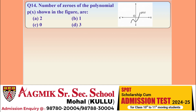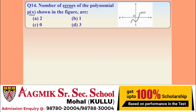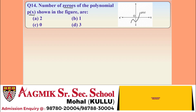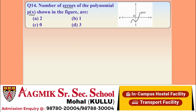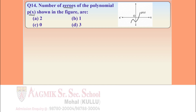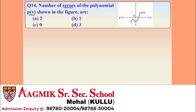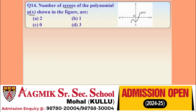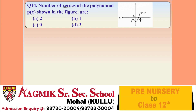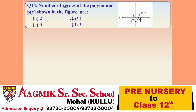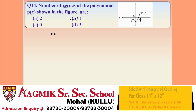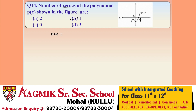Question 14: find the number of zeros of polynomial P(x) as shown in the figure. Zeros occur where the polynomial equals zero, i.e., where the graph cuts the x-axis. The graph cuts the x-axis at only one point, so there is only 1 zero. Option B is correct.